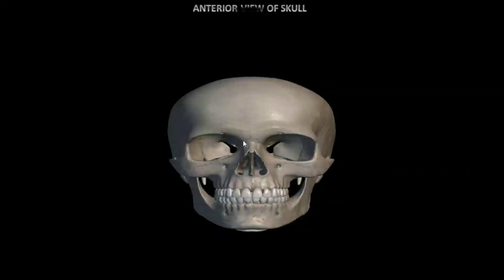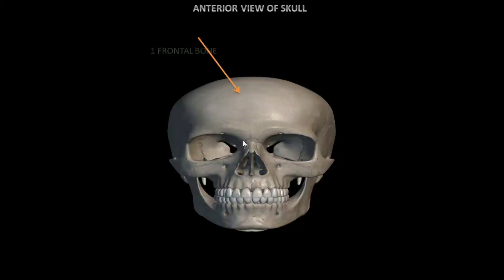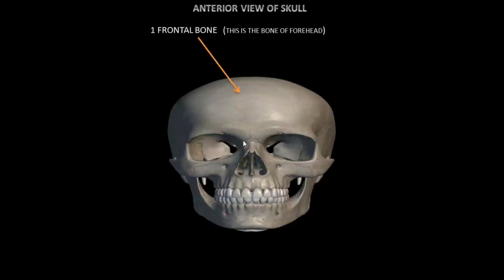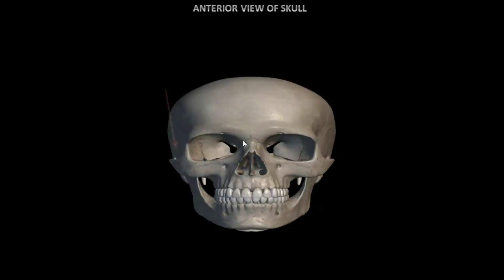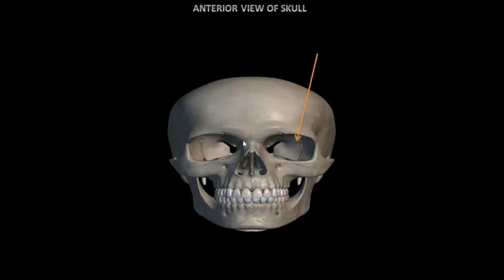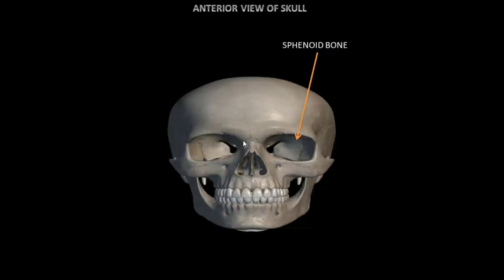First, let's see the anterior view of skull. The first bone is frontal bone — this is the bone of the forehead and it forms parts of the eye sockets. The next bone is temporal bone; they are two in number and rest one on each side of the head. Next bone is sphenoid bone, which helps form the bony socket that holds the eye and looks like a butterfly.